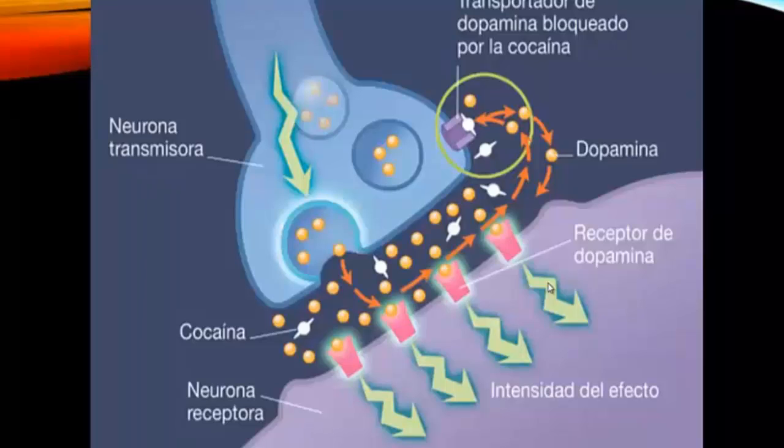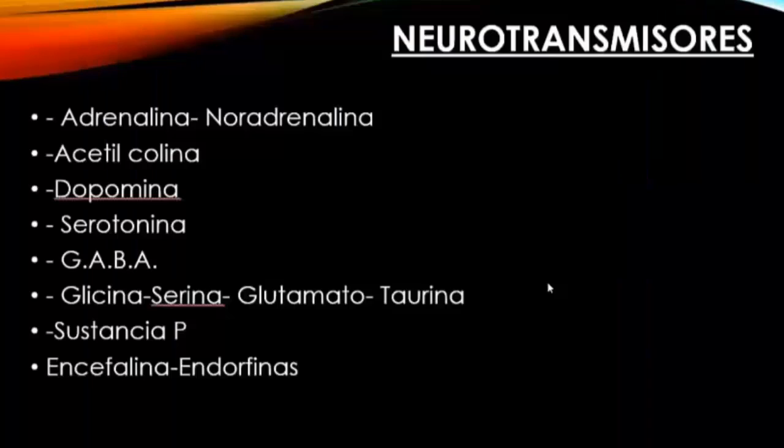Of the neurotransmitters most known, which are approximately 100, currently we can talk about adrenaline, noradrenaline, acetylcholine, dopamine, serotonin, gamma-aminobutyric acid, glycine, serine, substance P, enkephalin, endorphins, glutamic acid, glutamate, and taurine.